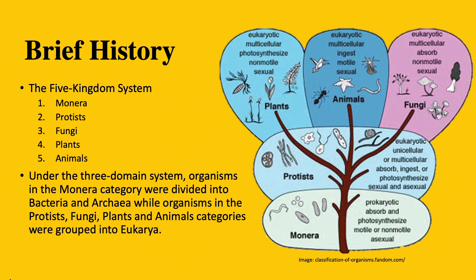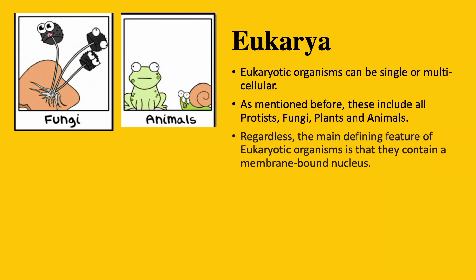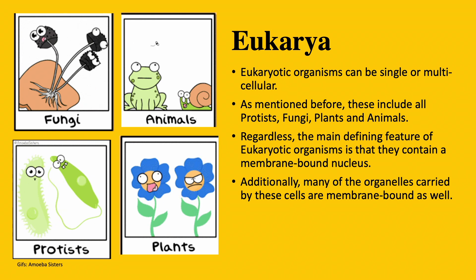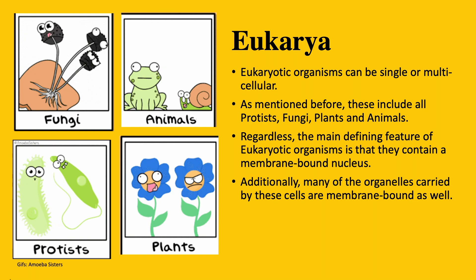Now let's talk about the three domains. Eukarya. Eukarya might be the group that you are most familiar with. Eukaryotic organisms can be single or multicellular. As mentioned before, these include all protists, fungi, plants, and animals. Regardless, the main defining feature of eukaryotic organisms is that they contain a membrane-bound nucleus. Additionally, many organelles carried by these cells are membrane-bound as well.